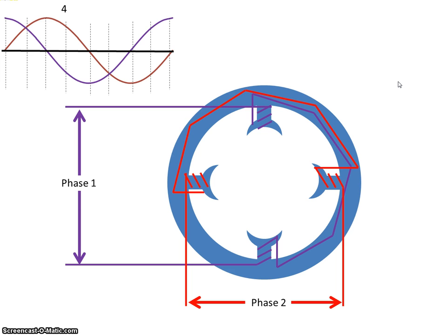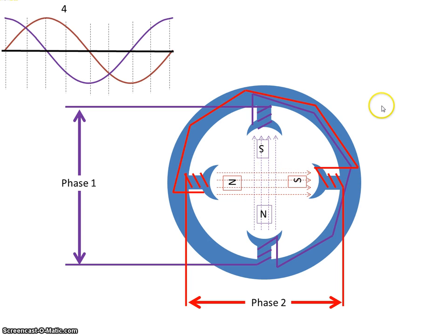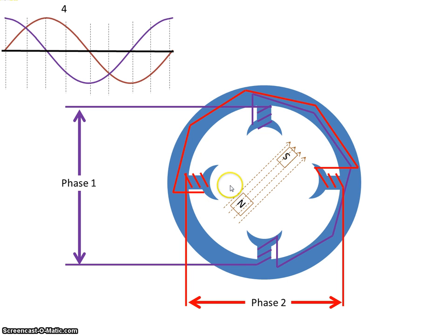At time four, phase one is still positive but phase two has now gone negative, therefore the current is flowing in the opposite direction on that winding, so the north pole is now here for this phase. And on phase two the north is still there, so the flux lines are in this direction. Again the flux lines can't cross, so we take up an intermediary position which is somewhere there. So our north pole has moved from there to here to here and now in that direction.